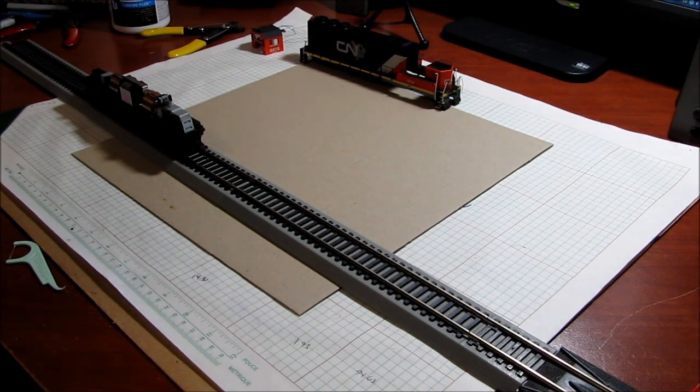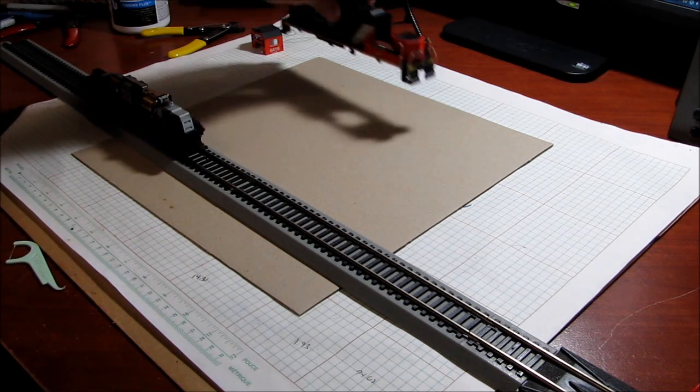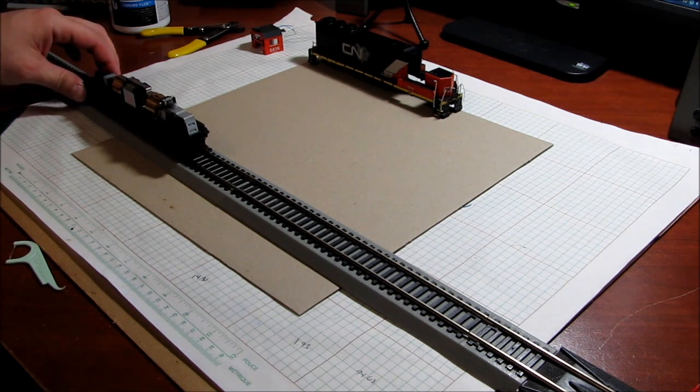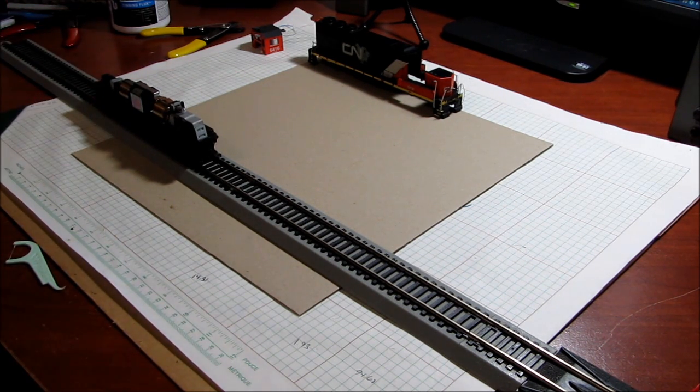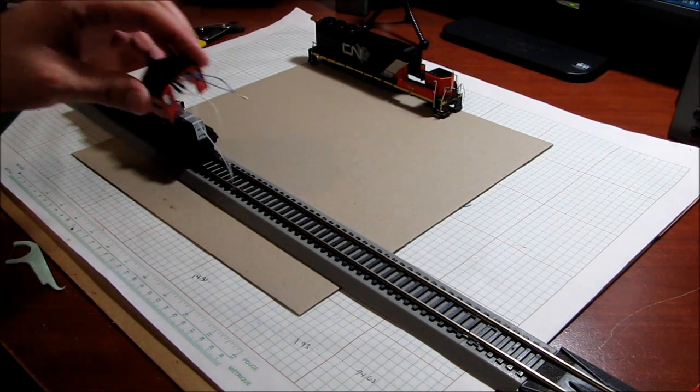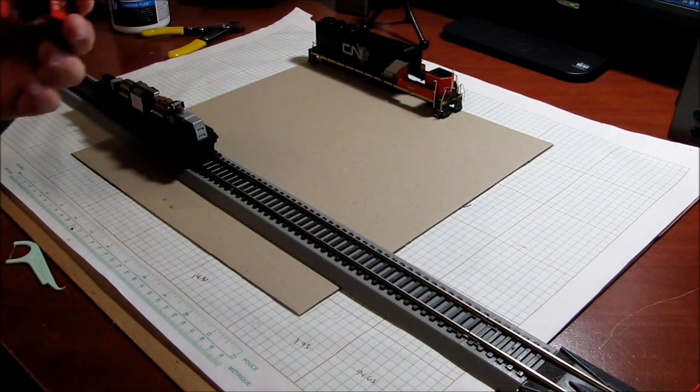Hey everybody, welcome back to DCC project number two: converting my GP40-2 into DCC with LEDs and sound. This is Part B where we're going to be converting the actual train. In Part A we installed the LEDs in the cab, so check out Part A for what we did at that step.